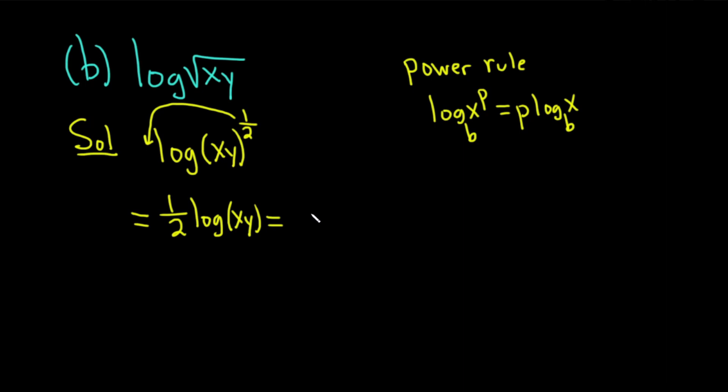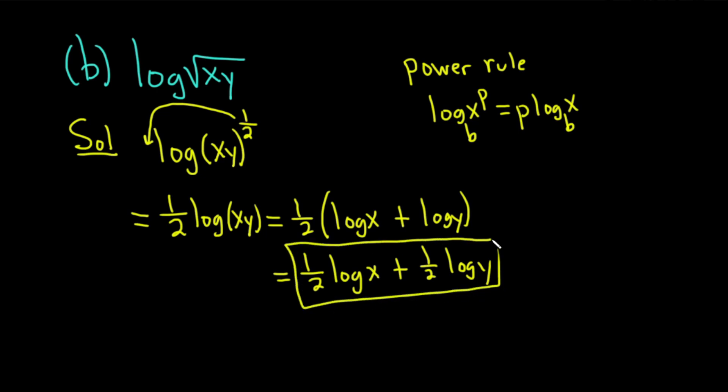And now this is pretty easy. We just apply our product rule. So this is one-half parentheses log of x plus log of y. That's the product rule we saw earlier. And then we can distribute the one-half. So this is one-half log x plus one-half log y.